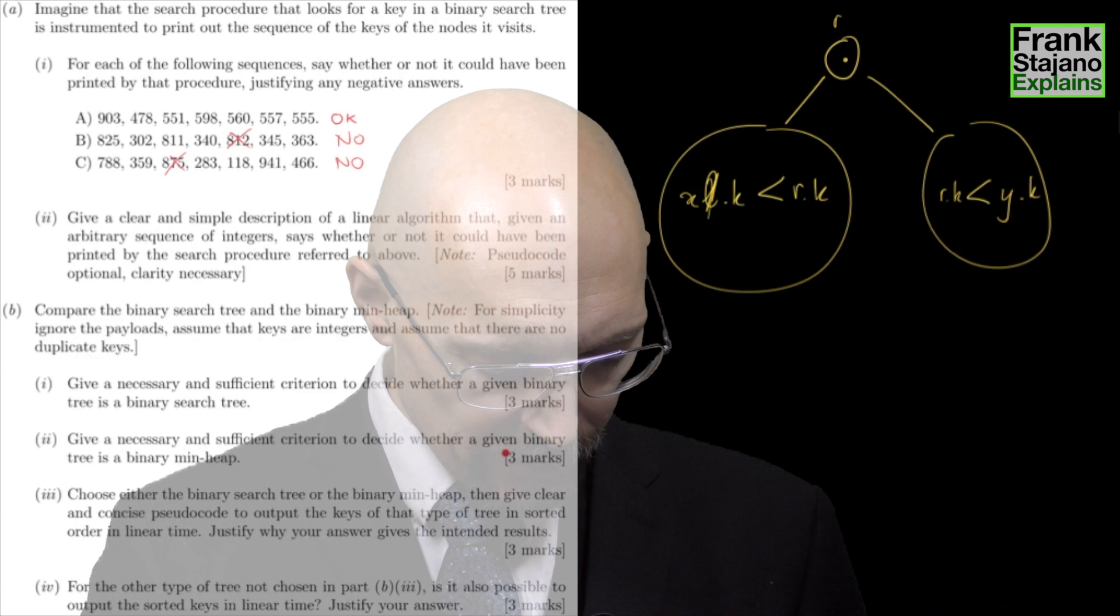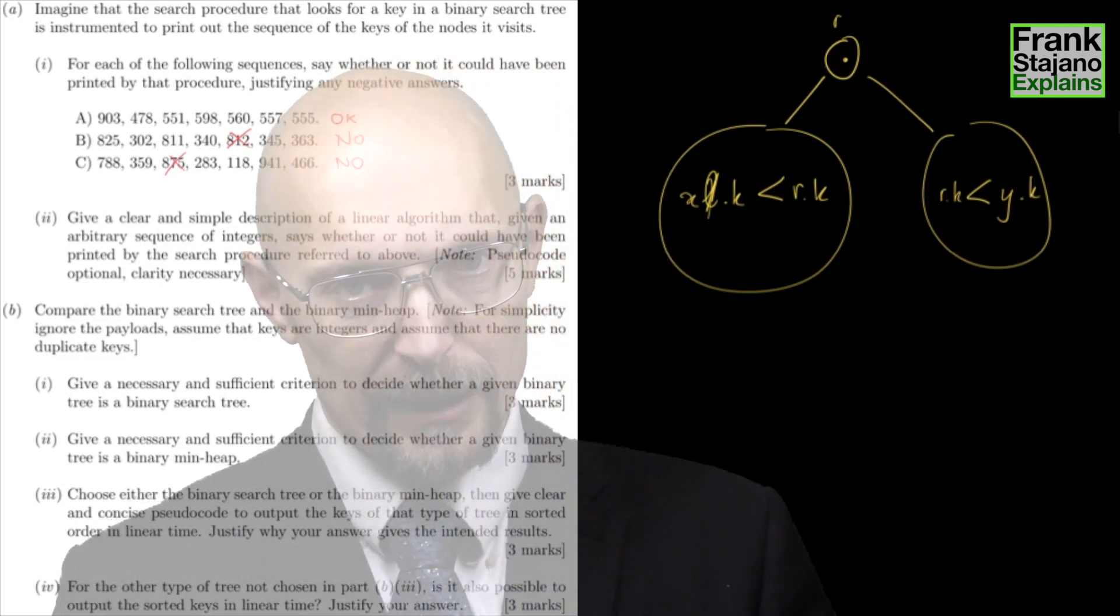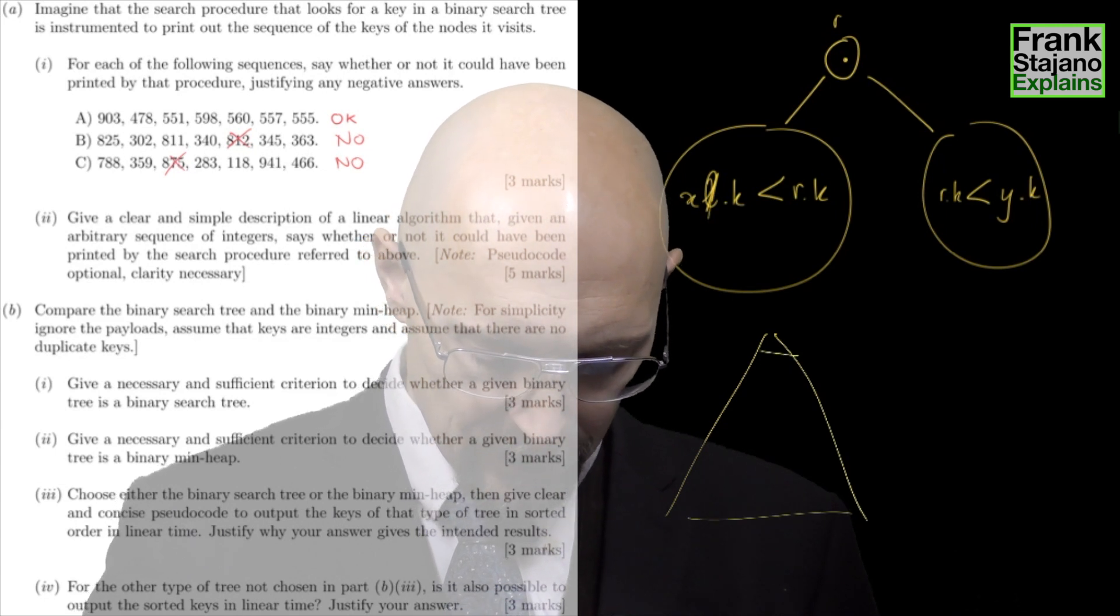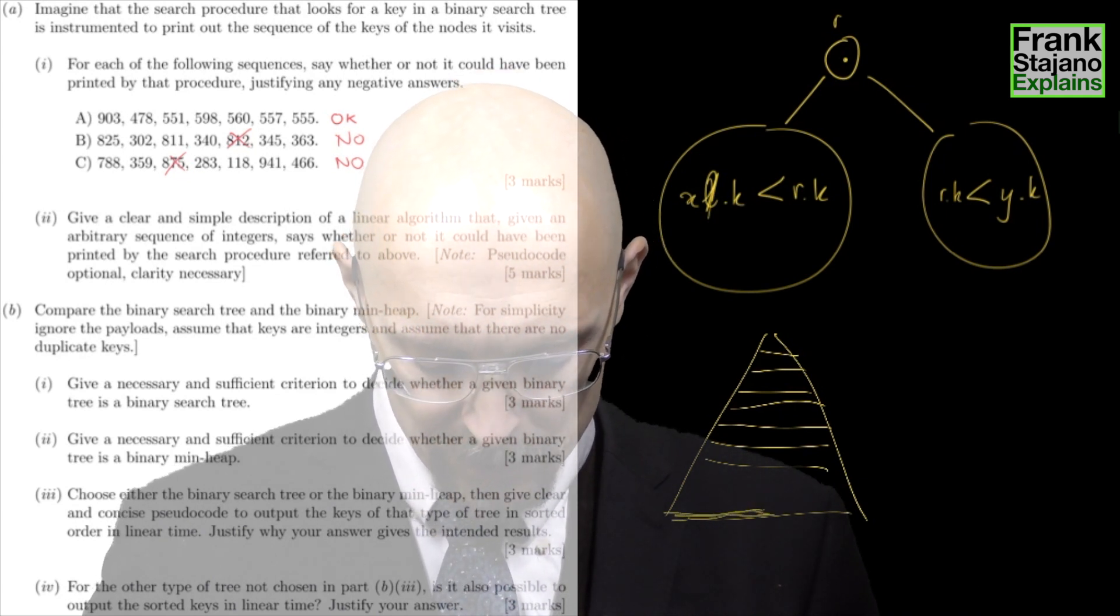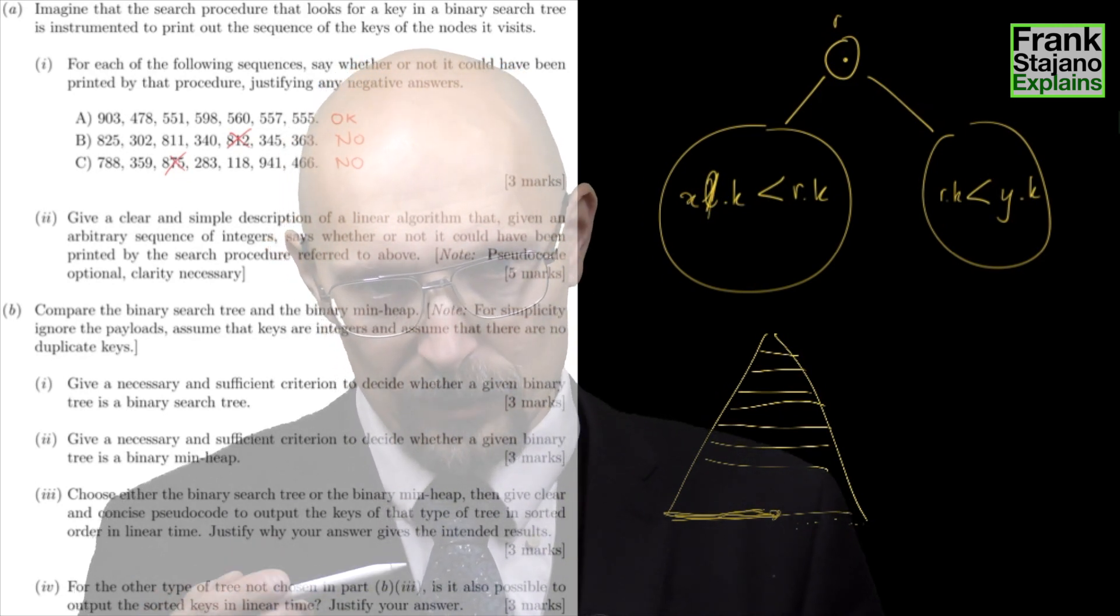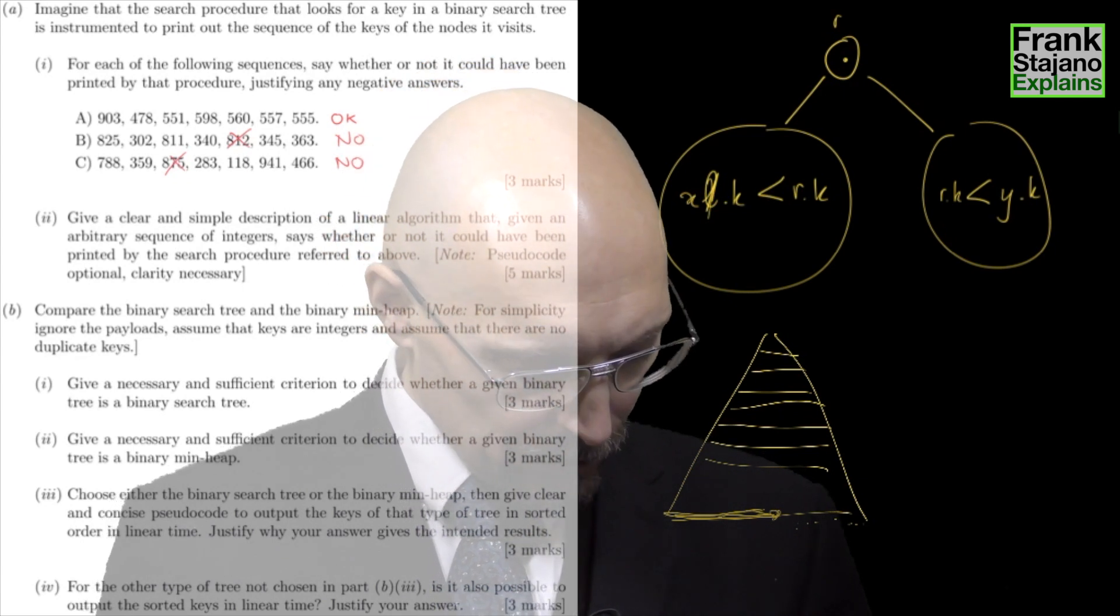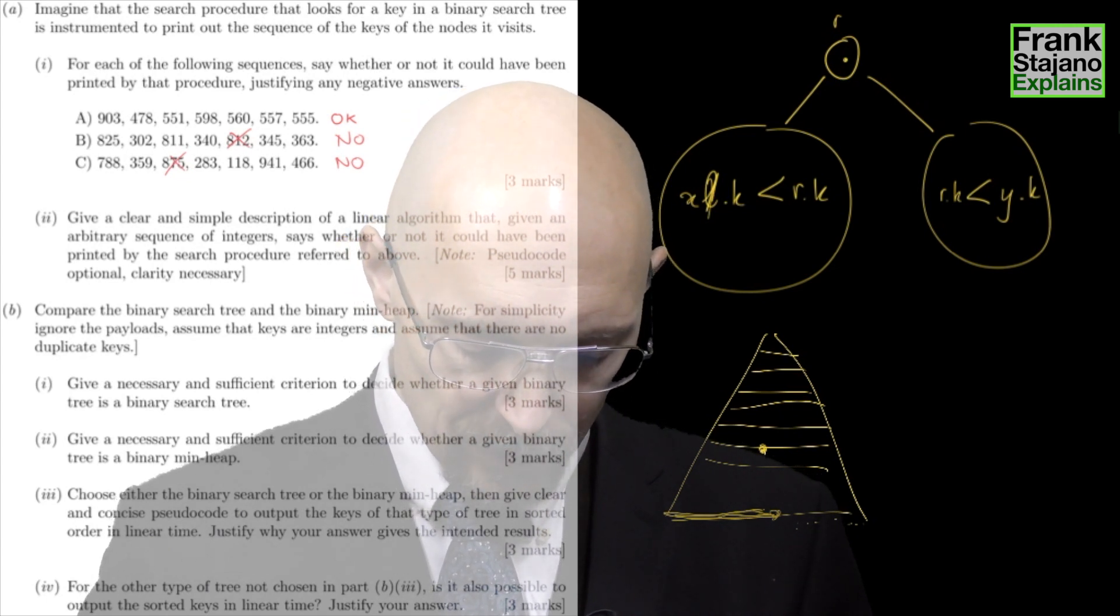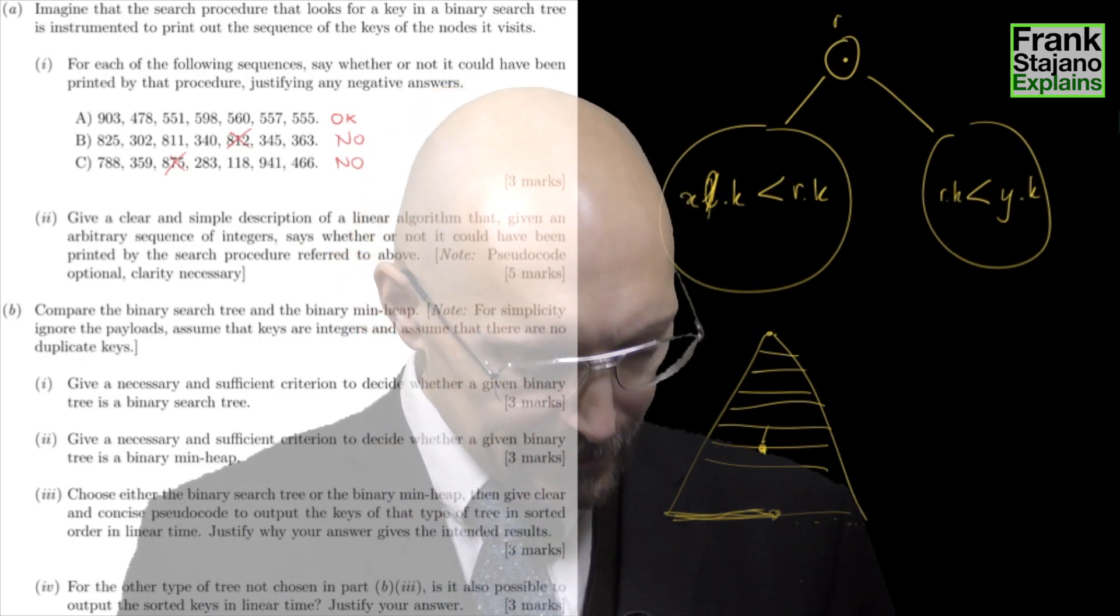Give a necessary and sufficient criterion to decide whether a given binary tree is a binary min heap. It has to be of a shape of almost full binary tree, which means all the levels of the tree are full, except possibly the last level. And if the last level is not full, then it must be full up to a certain point and then empty. So there can only be empty spaces at the rightmost end of the bottom level of this tree. And there's another necessary condition, which is that for every node in the tree, its key cannot be smaller than that of its parent. So that in the end, the smallest key of the whole tree is always here in the root. And that's another easy three marks.